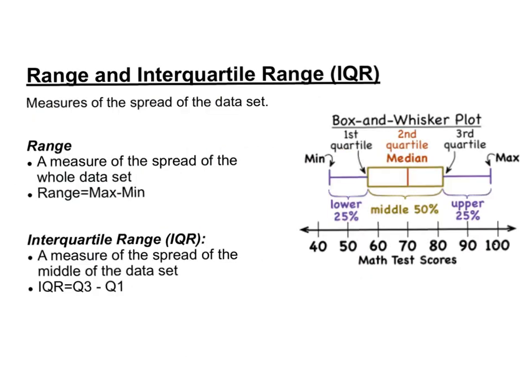With box and whiskers plots, there are a couple of things we can calculate. First, we can see how much the spread of the data is. We can calculate the range, which is the max minus the min — that's the spread of the whole data set. Additionally, we can calculate the interquartile range, which is a measure of the spread of the middle of the data set, calculated by subtracting Q3 minus Q1.